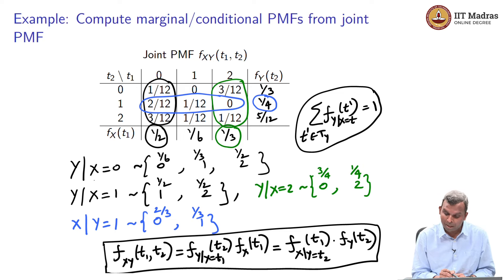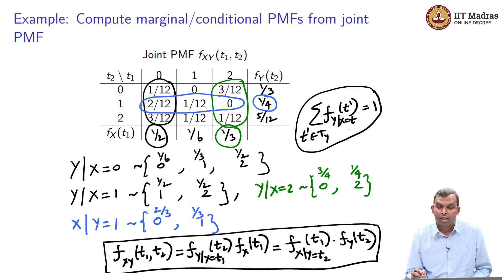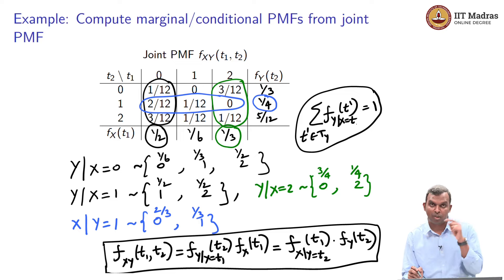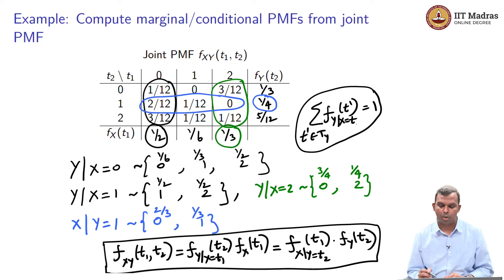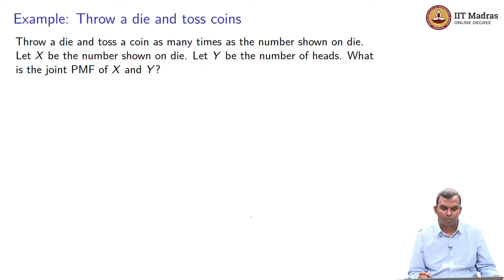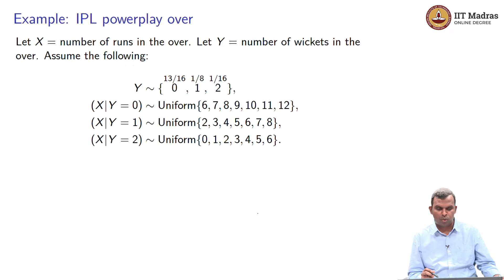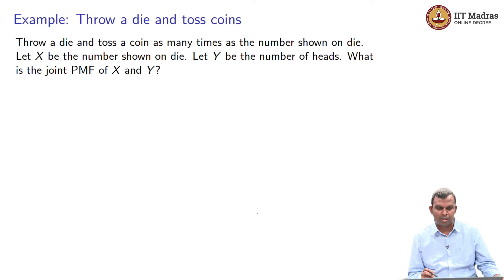Adding up all the probabilities of a conditional PMF gives 1. Remember, X equals t must be fixed — that is one conditional random variable. When you keep X fixed and vary Y, summing Y given X gives 1. That is an important identity to remember. I think I have covered most of the things. I have a few examples to show you — this is a good point in the lecture to break and come back for the next lecture. Thank you very much.